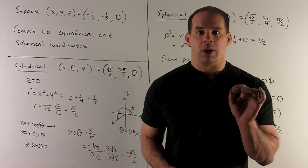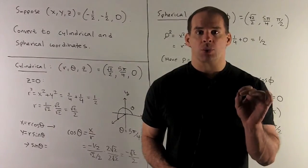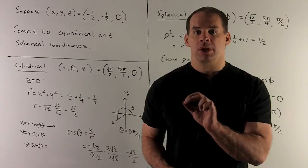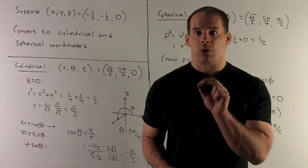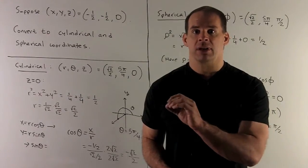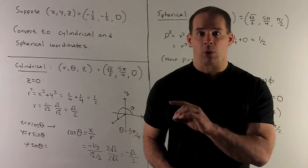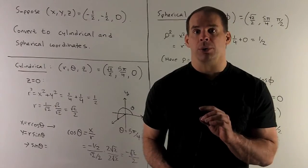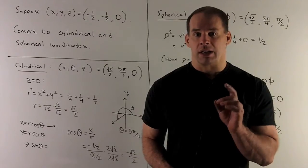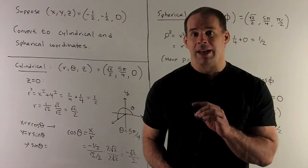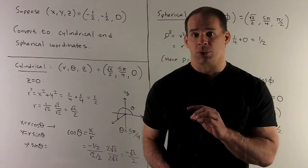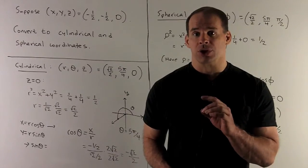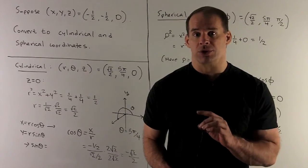We have r squared equals x squared plus y squared. So it's going to be one-fourth plus one-fourth, which gives me a half. Take the square root, that gives r equals one over square root of two. Cleaning up by multiplying by square root of two over square root of two, that turns into r equals square root of two over two.